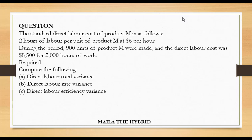Required: compute the following — A, direct labor total variance; B, direct labor rate variance; and C, direct labor efficiency variance.